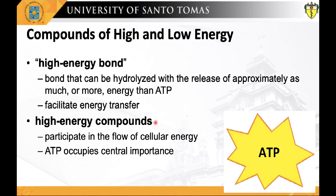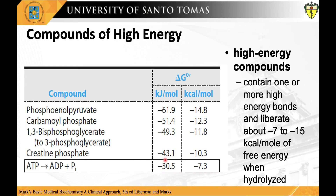High-energy compounds participate in the flow of cellular energy. Among the high-energy compounds mentioned, ATP occupies central importance. This table lists down the high-energy compounds you will commonly meet in the next lectures. These are, in the order of decreasing standard free energy change: phosphoenol pyruvate, carbamyl phosphate, 1,3-bisphosphoglycerate, creatine phosphate, and of course the benchmark adenosine triphosphate, or ATP.